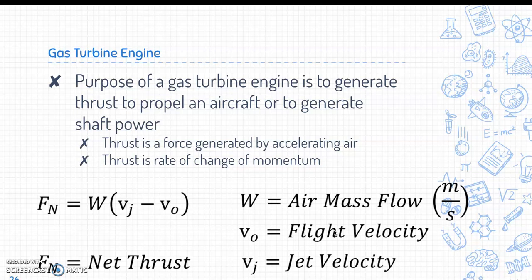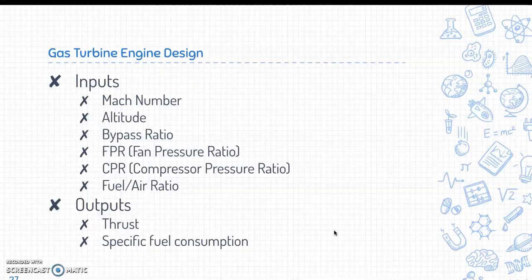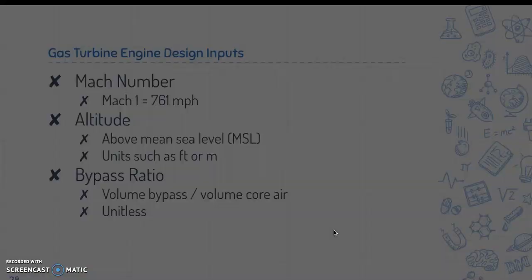Note the thrust formulas shown — you'll need them for your assignment. A gas turbine engine has specific inputs and outputs. Inputs include: Mach number, altitude, bypass ratio, fan pressure ratio (FPR), compressor pressure ratio (CPR), and fuel-to-air ratio. Outputs include thrust and specific fuel consumption (TSFC).